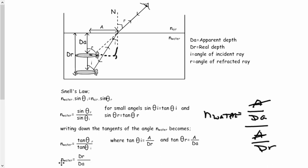And just to kind of give you an idea, n_water is usually about 1.33. So we've got 1.33 is equal to the real depth divided by the apparent depth.